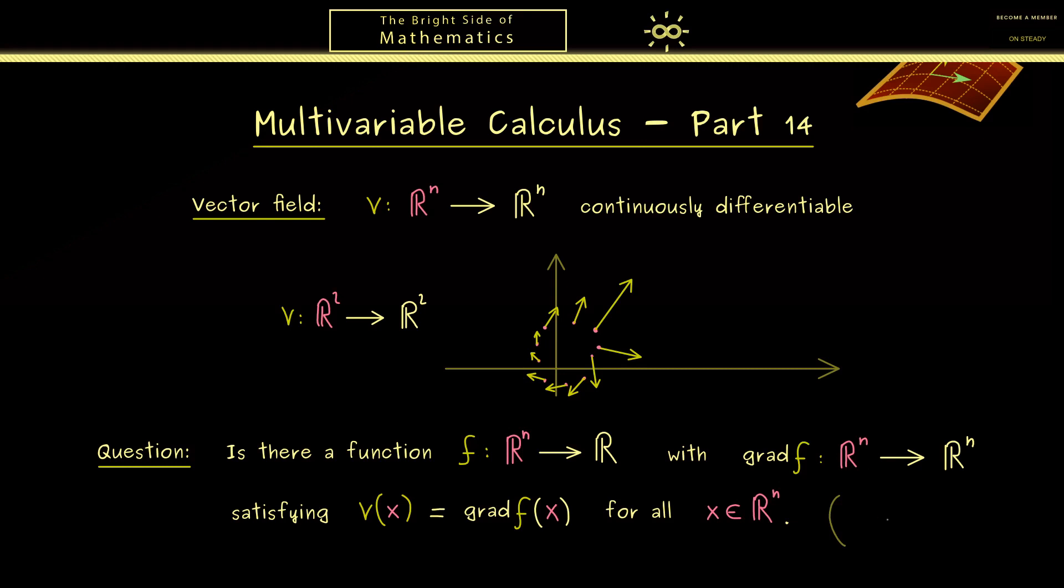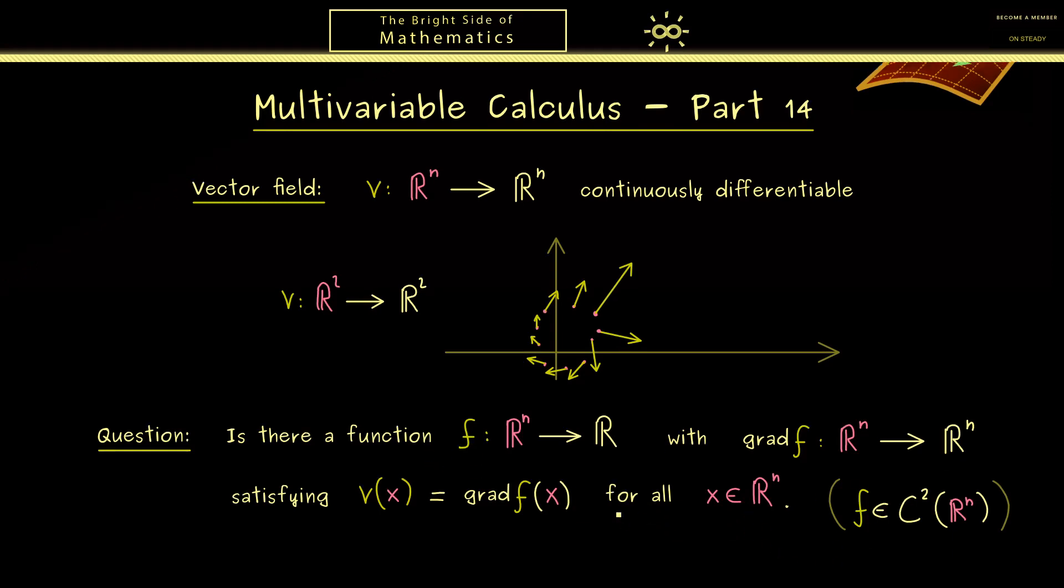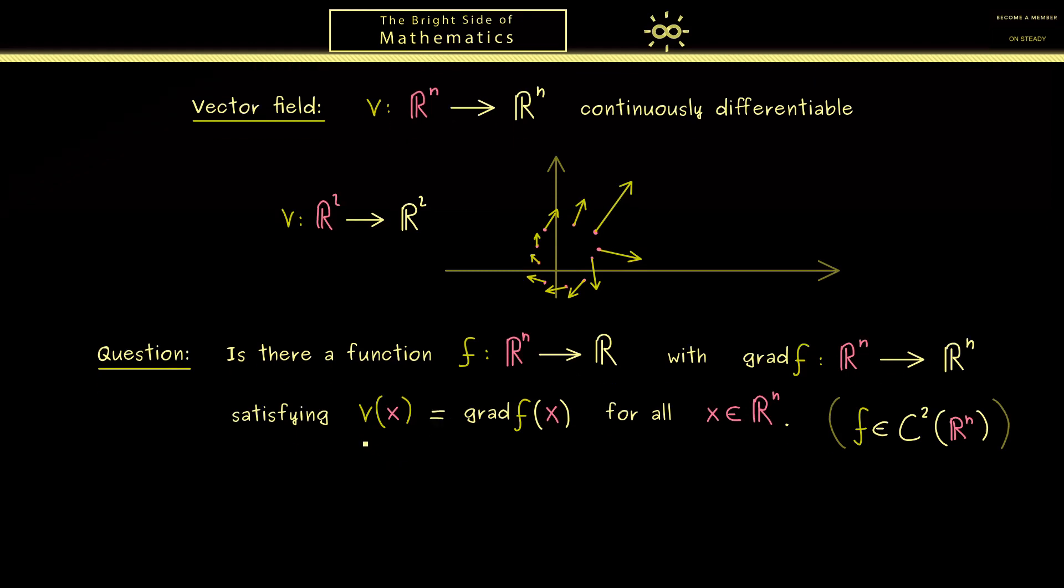Okay, but now you should see this question only makes sense if our function f is C^2, so it's two times continuously differentiable. So you see, this is the minimal thing we need. Moreover, in this case, such a function f is called a potential function for the vector field V. The potential function carries all the information for the vector field V.